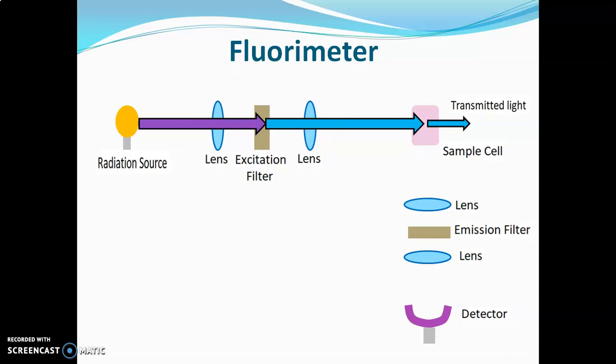Due to absorption of UV radiations, the sample gets excited and starts fluorescing. The fluorescence light passes towards the emission filter, which absorbs UV radiation and only visible radiations are allowed to pass towards the detector. Visible radiations hit the surface of the detector, which measures the intensity of light.